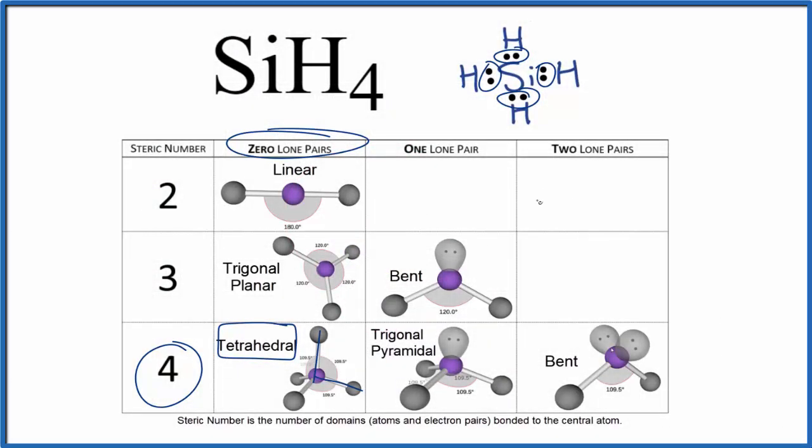You could also use the AXE notation to figure out the molecular geometry. A is the central atom, that's the Si. X, that's the number of things bonded. We have our one, two, three, four of those hydrogen atoms. And E, that's the number of lone pairs, but we don't have any lone pairs. So often it's just written AX4. And if you look up AX4, it's going to be tetrahedral.